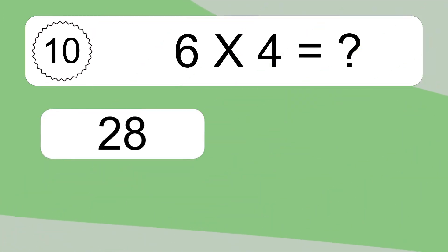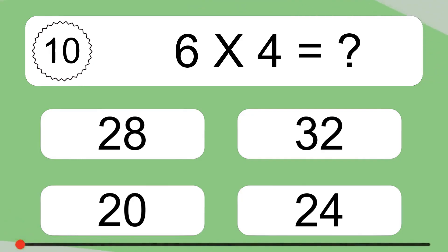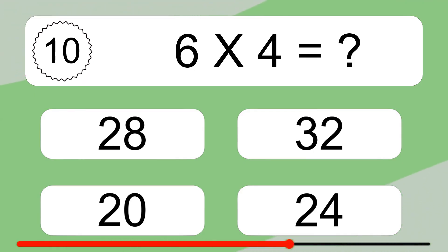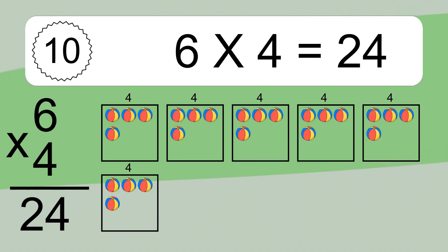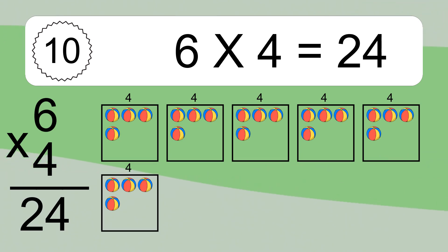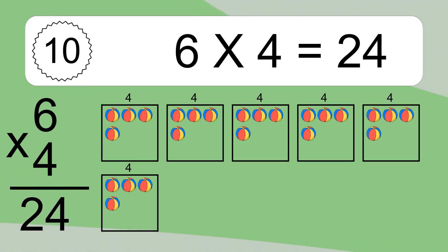6 times 4 equals what? 6 times 4 equals 24. We have 6 boxes, and each box has 4 colorful balls inside. If you count all the balls in all the boxes together, you will have 6 times 4 balls. This equals 24 balls.